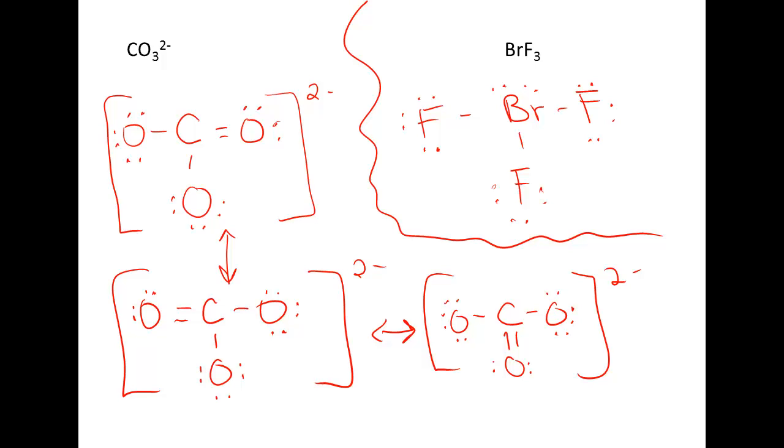When we look at the next one that we did, BRF3, notice that there are no multiple bonds. When you only have single bonds, then you don't have to worry about resonance structures because there's no multiple bonds to move around. So BRF3 does not have resonance structures, and this would be the only one that you would draw.